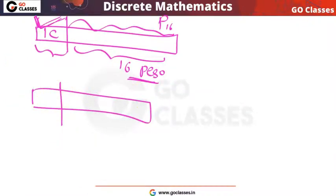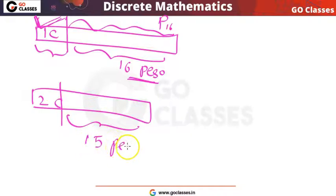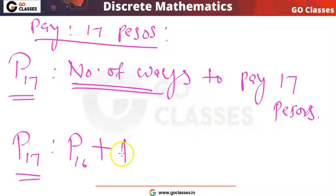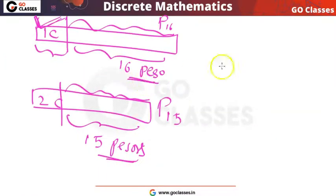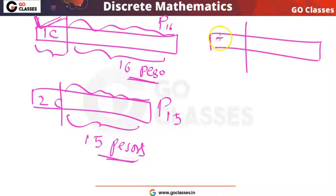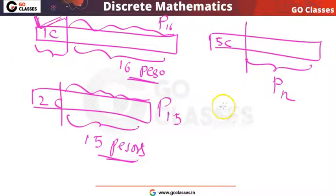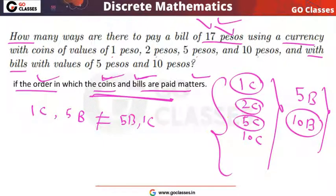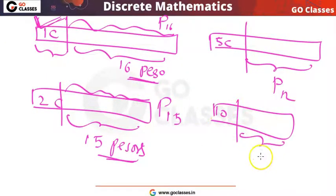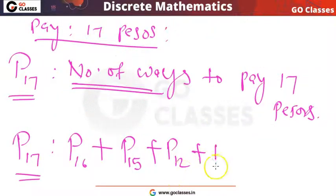Similarly, if the first thing you pay is a 2 peso coin, then the remaining you have to pay is 15 pesos, so you can have P15 ways. Or if you pay a 5 peso coin first, then the remaining is P12.